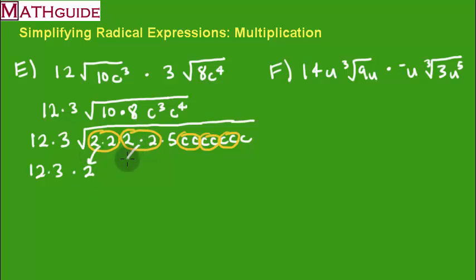We've got another square root of 4, which is 2. We've got the square root of c squared. The square root of c squared is c. Another c. And another c. So what's left underneath the square root? 5c.